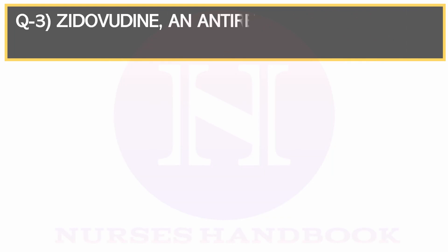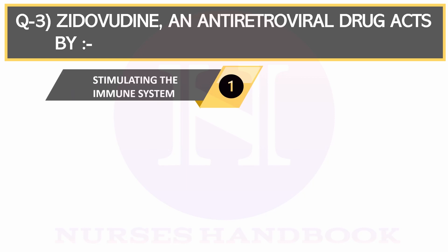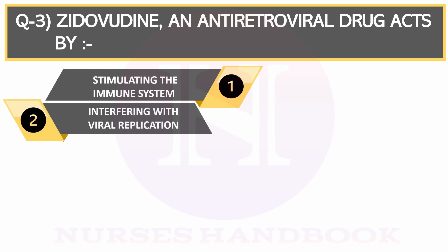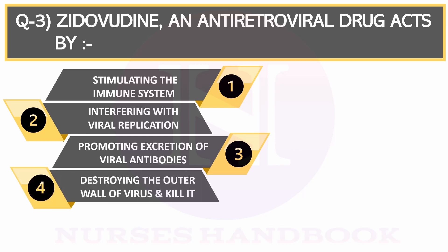Question number 3. Zidovudine, an antiretroviral drug, acts by Option 1: Stimulating the immune system, Option 2: Interfering with viral replication, Option 3: Promoting excretion of viral antibodies, and Option 4: Destroying the outer wall of the virus and killing it.